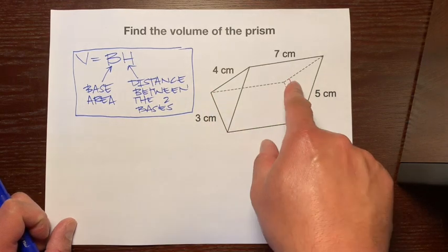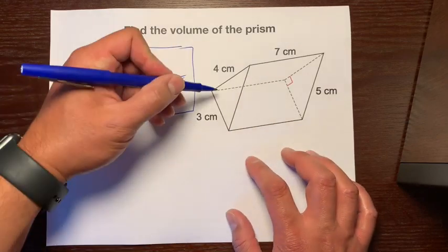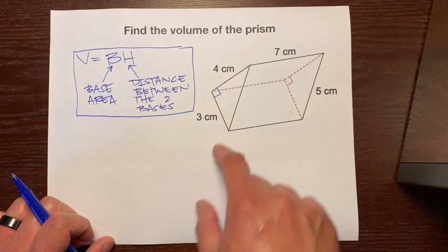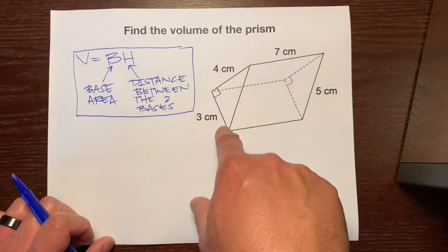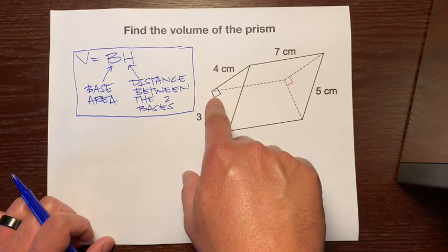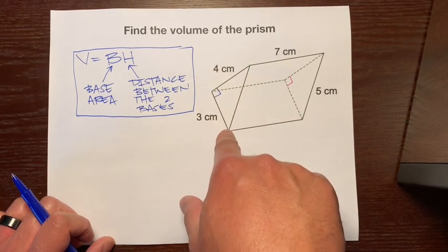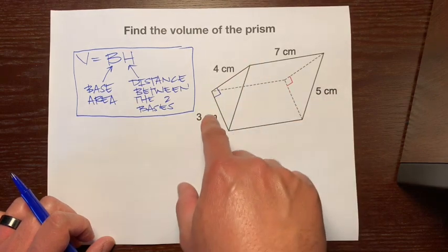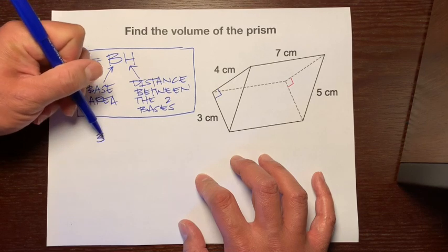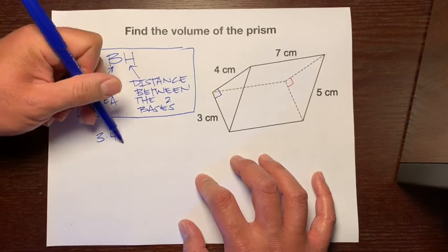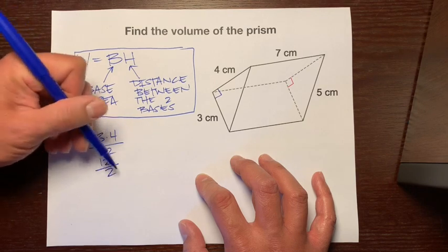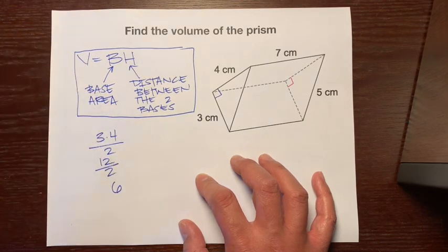The base are these two triangles right here. These are our two bases. That's 90 degrees right here. So we have a right triangle, and we know that the base and height for a triangle are always perpendicular. So let's find the area of this base, which is a triangle. Base times height divided by 2 is 3 times 4 divided by 2, which is 12 divided by 2, which is 6.